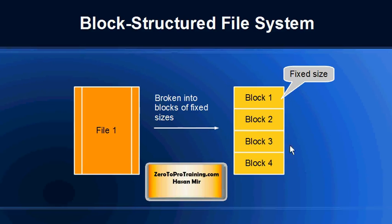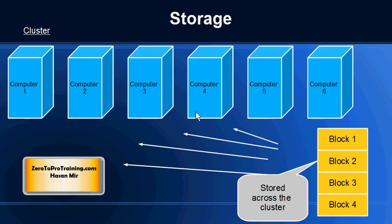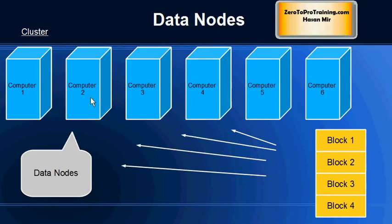You can define the size of the blocks, but all blocks will be of equal and fixed size. To take advantage of Hadoop features, you would implement Hadoop on a cluster of computers. When you store a file, it will be broken down into blocks of fixed sizes, and each block will go into a computer on the cluster. Not necessarily all the blocks will go on the same computer — they will be spread across the cluster. Each computer in a cluster is called a data node.